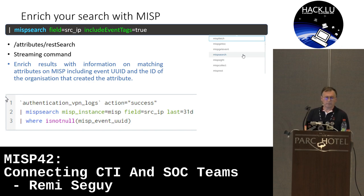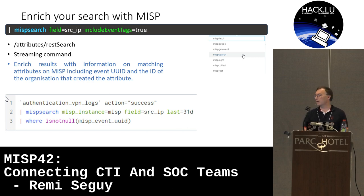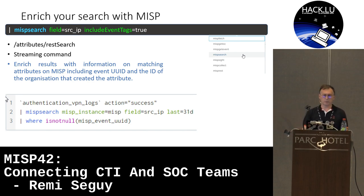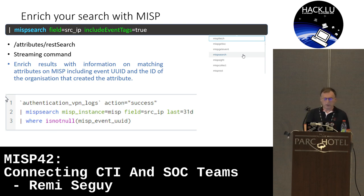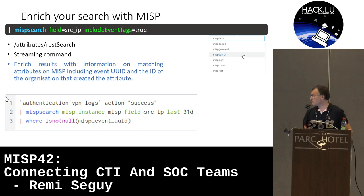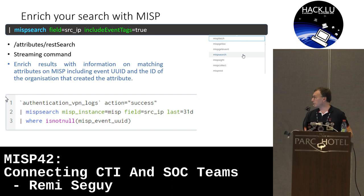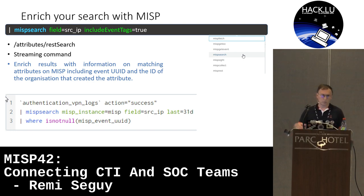The first command is MISP search. It allows you to query MISP to check if the value of a field — here, src_ip — has been seen on MISP, and if yes, you get information from MISP into your search. It's a streaming command, so you can use it wherever you want in your search pipeline, not just on the first line. For example, you can query your VPN authentication logs for successful authentications and check if the source IP has been seen in any events published in the last month on MISP — and if yes, trigger an alert. Results depend on the quality of the IOCs.